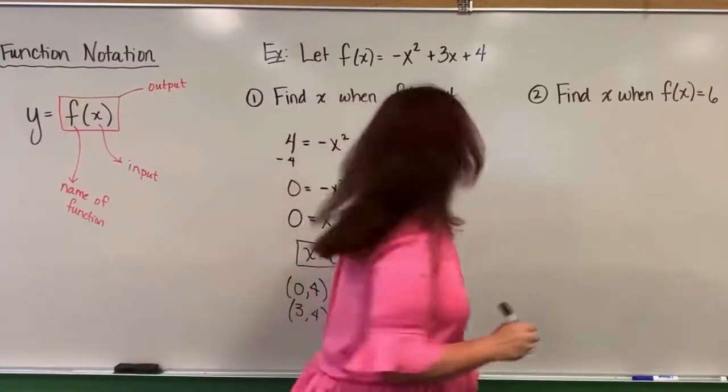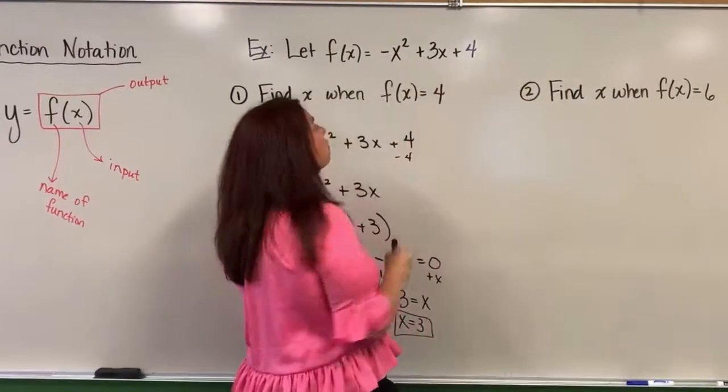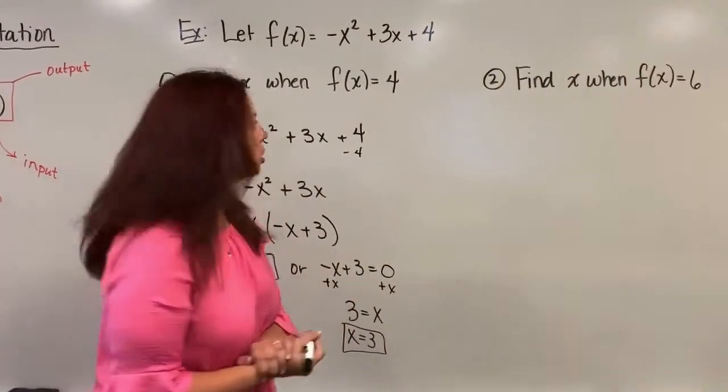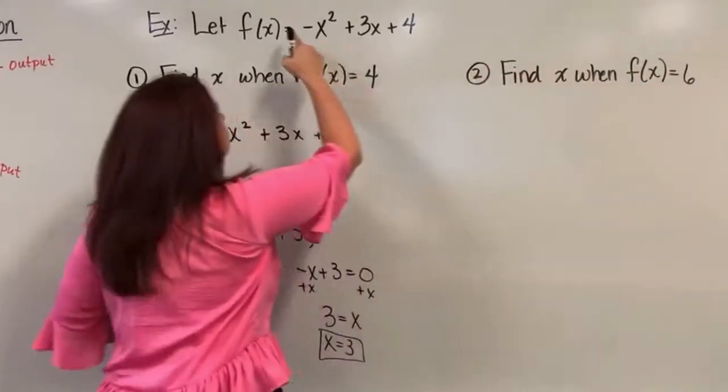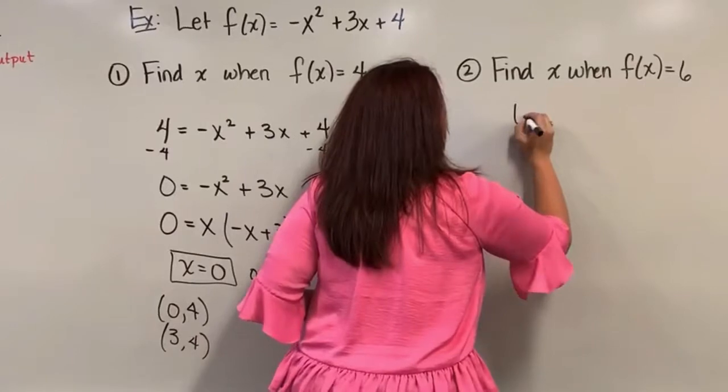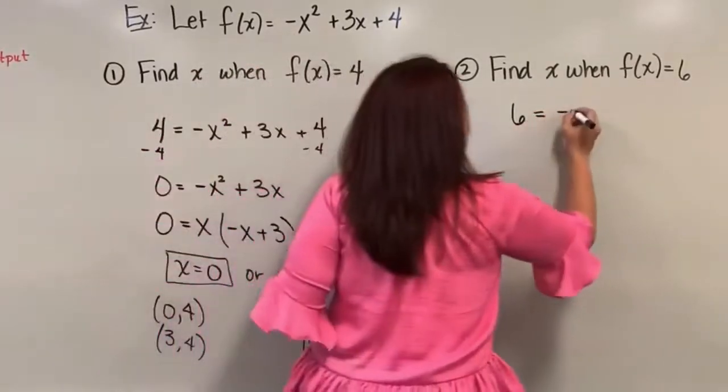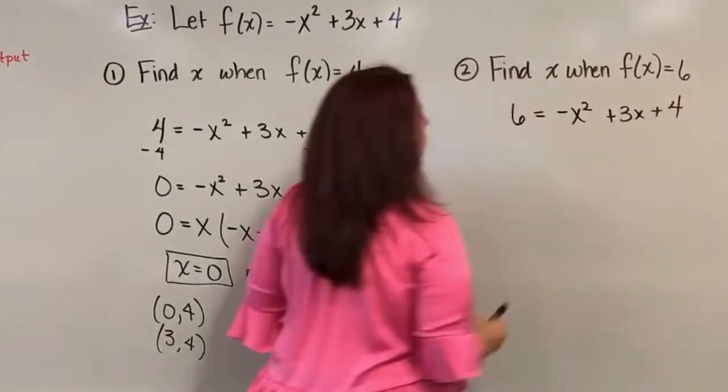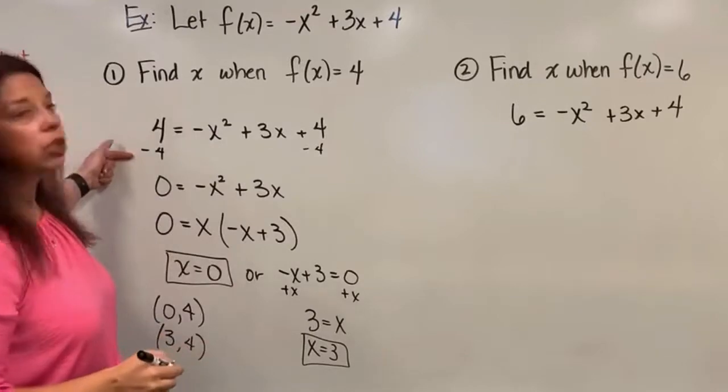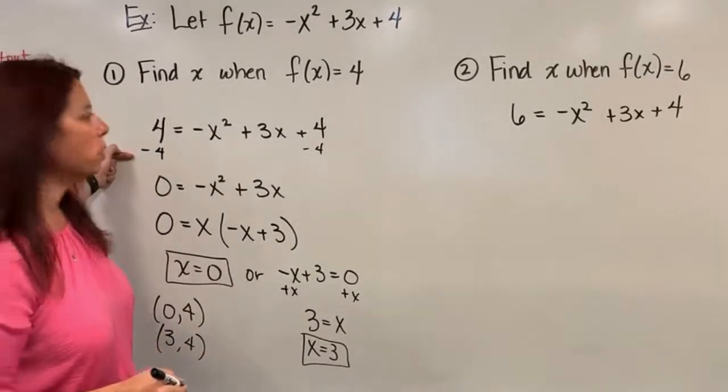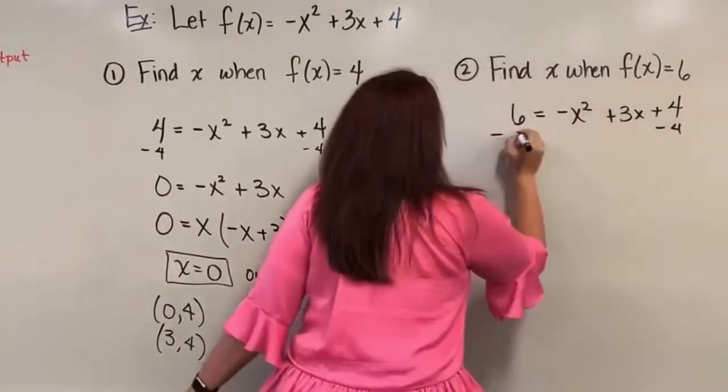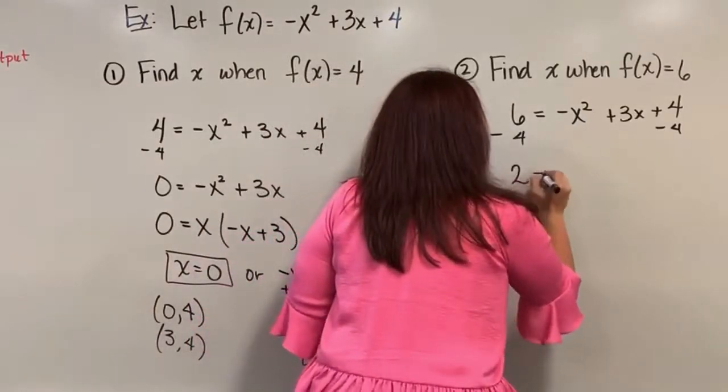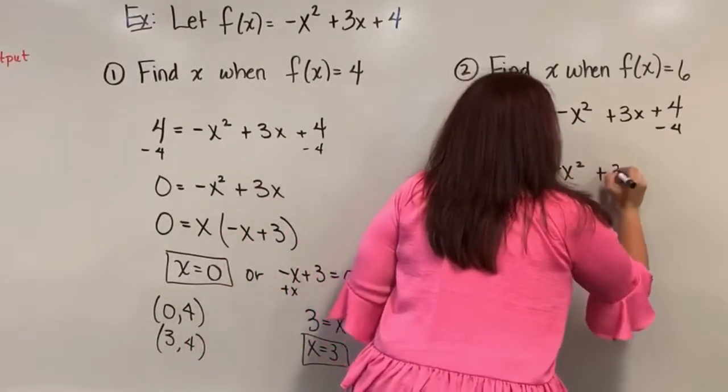Now let's do one more example. So here I'm going to use the same function f of x, but I'm going to this time find x when f of x equals six. Let's see how different that looks. So I'm going to take my six and substitute it into the f of x, just like I did the previous example. So I have six equals negative x squared plus three x plus four. I'm going to start this just as I did this first example by subtracting four to both sides. So when I do that, unfortunately though, I do not have zero left over.